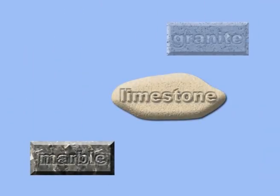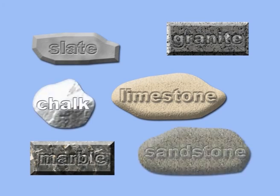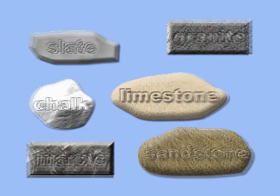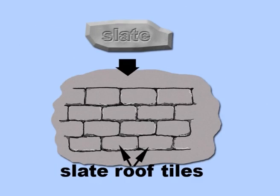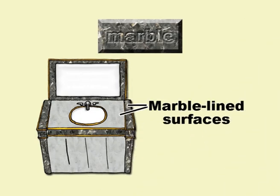There are many different sorts of rocks, and each type has different characteristics that can make it useful for particular purposes. For example, slate can be split into thin waterproof sheets so that it can be used on roofs. Marble is also waterproof and comes in a range of colours and can be polished to give it an attractive appearance, so it is used to line surfaces in bathrooms and on benchtops.